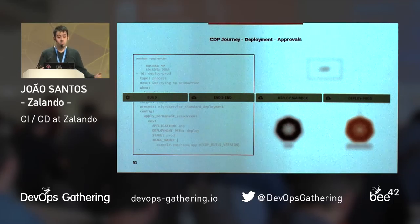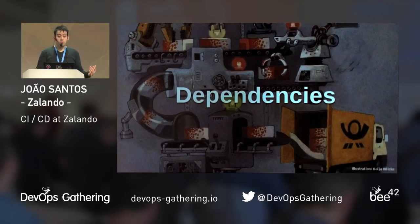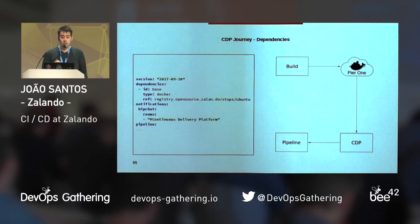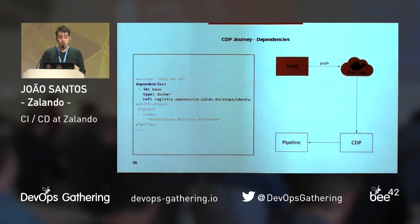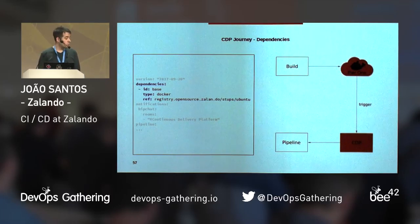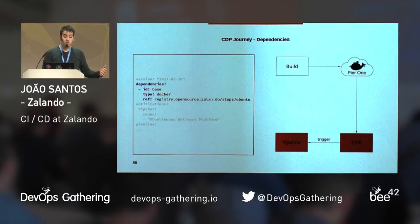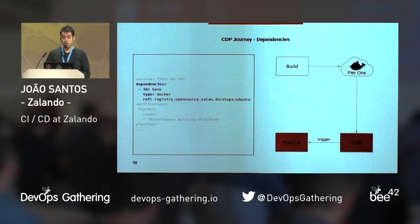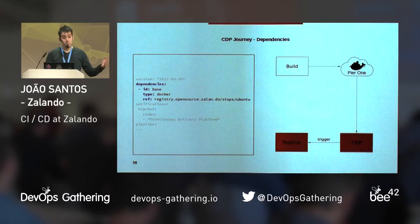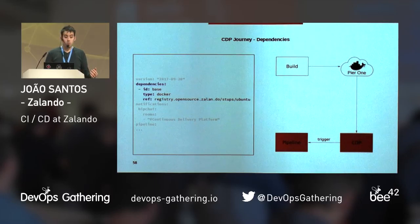Besides code changes, there is a second way to trigger pipelines in CDP — we call it dependencies. CDP pipelines can also be started by pushing a Docker image to our internal Docker registries. When a Docker image is pushed to our Docker registry, it notifies CDP through an SQS queue, which in turn triggers pipelines that depend on that Docker image. The tag and full image names are then available inside the pipeline as environment variables. This allows projects to be rebuilt when new versions of their base images are available — for example, if there are security fixes, you don't want that to be a manual process — and it keeps deployment configuration separated from the code if necessary.